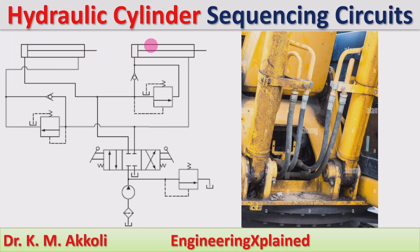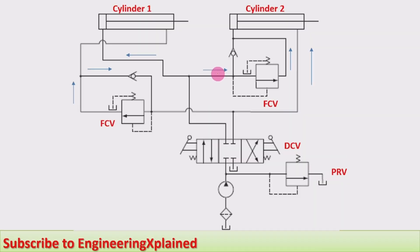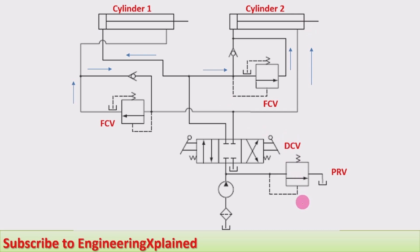Hello everyone, welcome to the session. In this session I am going to explain about the hydraulic cylinder sequencing circuits. This is the circuit for the hydraulic cylinder sequencing. Sequencing means the extension of the cylinder is taking place one after another, or retraction is taking place one after another — that is called sequencing. The sequencing circuit consists of a tank, filter, pump, and pressure relief valve, and a 4 by 3 direction control valve.